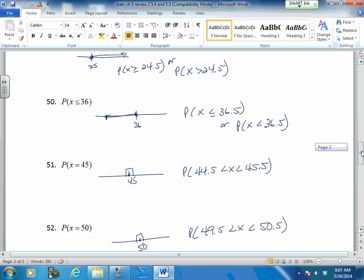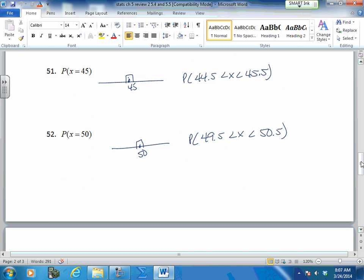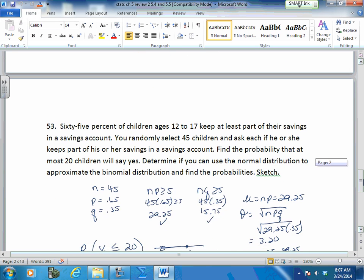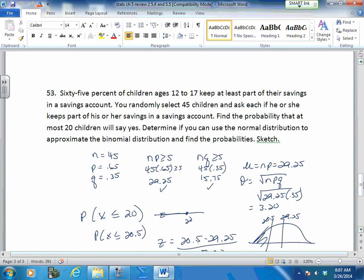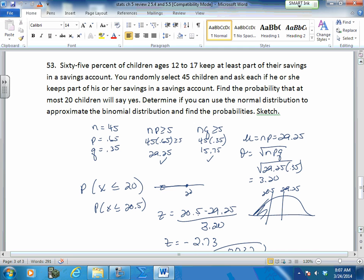And the last one was also another equal. And the last problem you had was using all of this together. So be careful in your wording. 65% of, this is the age of children 12 to 17, this is your people that you select, 45, that's the n. And ask her he or she keeps part of their savings account, blah blah blah. Determine first, here's your binomial distribution. Binomial says k = 2, so therefore you have to pass. Make sure it passes. Find your mean, find your standard deviation.